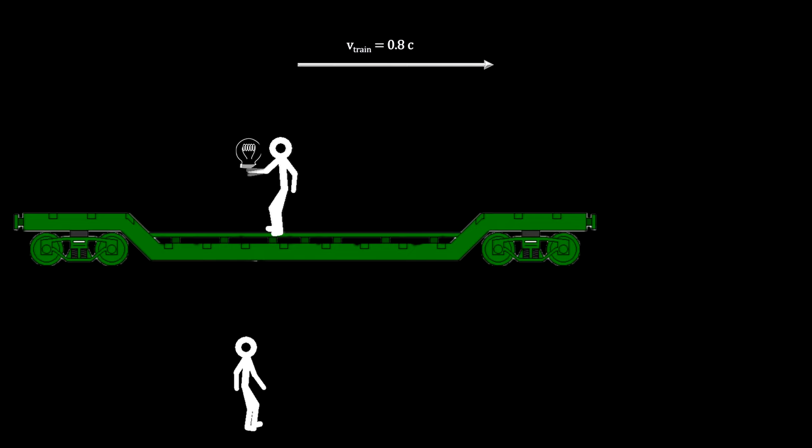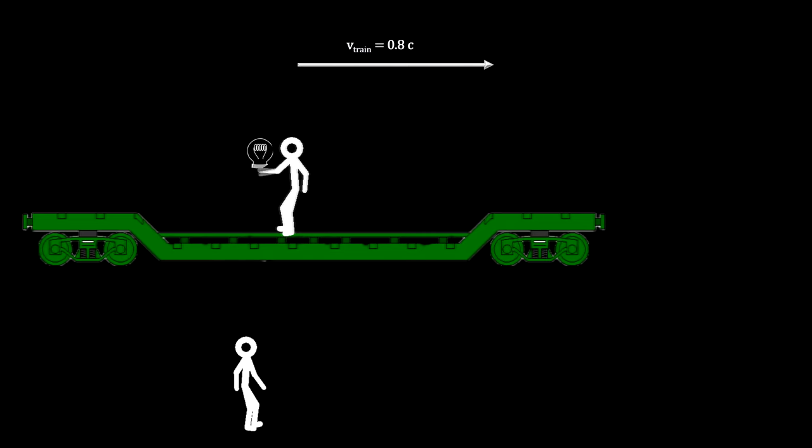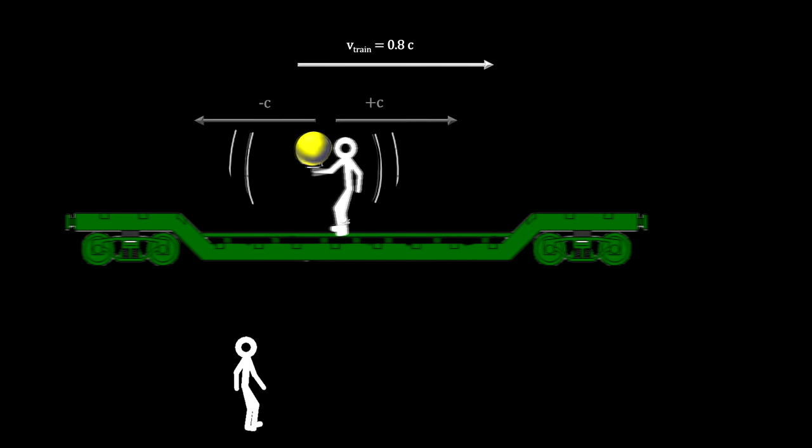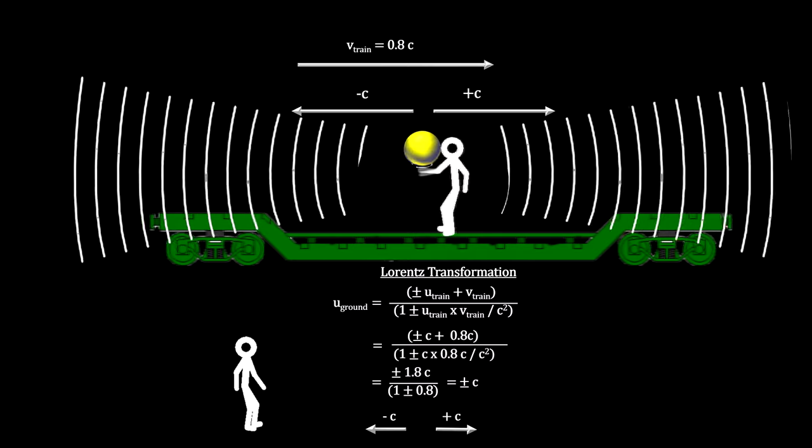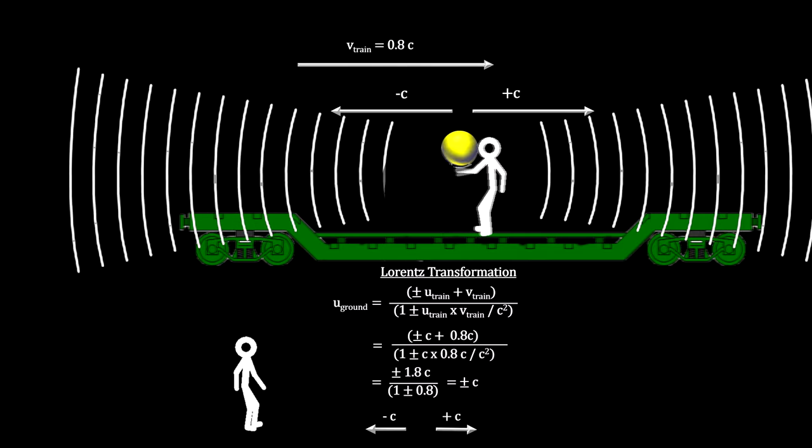You can even see that with the relativistic equations. If the train was traveling at 0.8 times the speed of light and a light was turned on, the person on the ground will see the light traveling at the speed of light, just like the person on the train will.